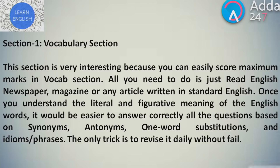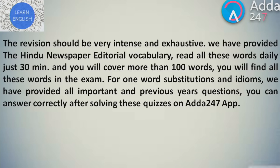Section 1, Vocabulary Section. This section is very interesting because you can easily score maximum marks in the vocab section. All you need to do is just read English newspapers, magazines, or any article written in Standard English. Once you understand the literal and figurative meaning of English words, it would be easier to answer correctly all questions based on synonyms, antonyms, one-word substitutions, and idioms or phrases. The only trick is to revise daily without fail. The revision should be very intense and exhaustive. We have provided the Hindu newspaper editorial vocabulary. Read all these words daily, just 30 minutes, and you will cover more than 100 words. You will find all these words in the exam. For one-word substitutions and idioms, we have provided all important and previous year questions. You can answer correctly after solving these quizzes on the Adda247 app.